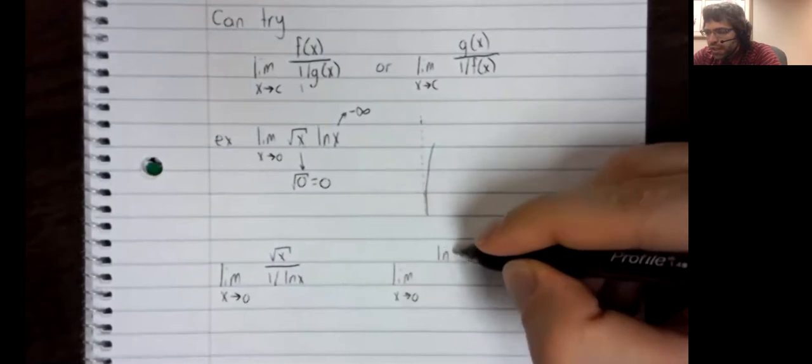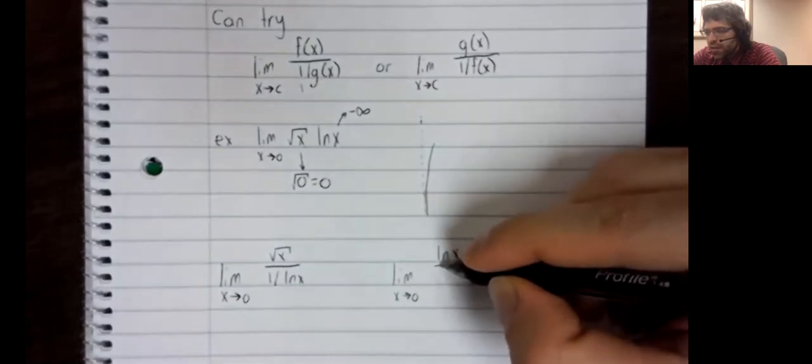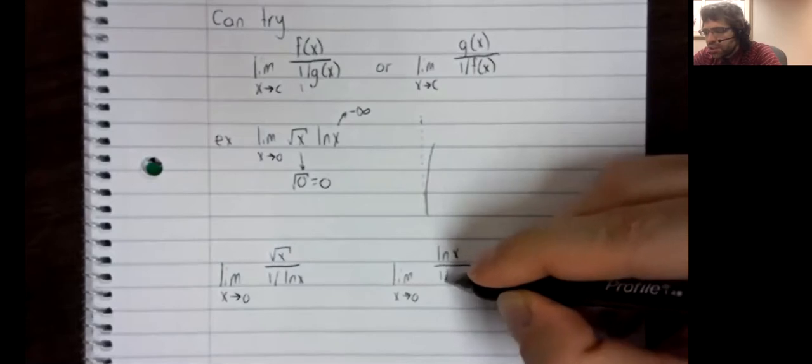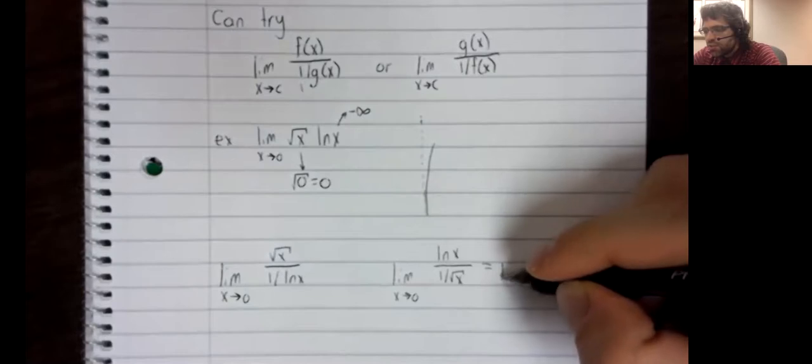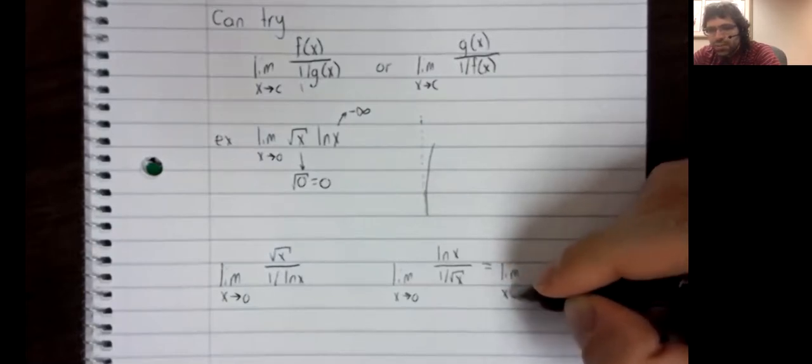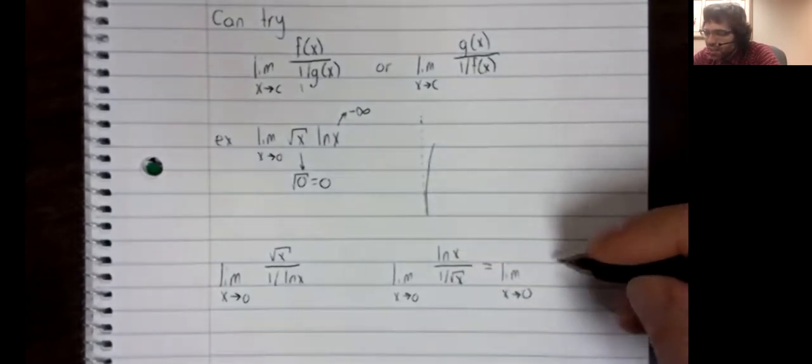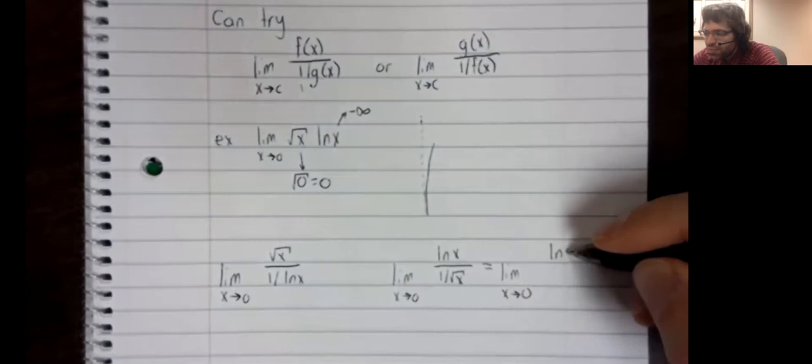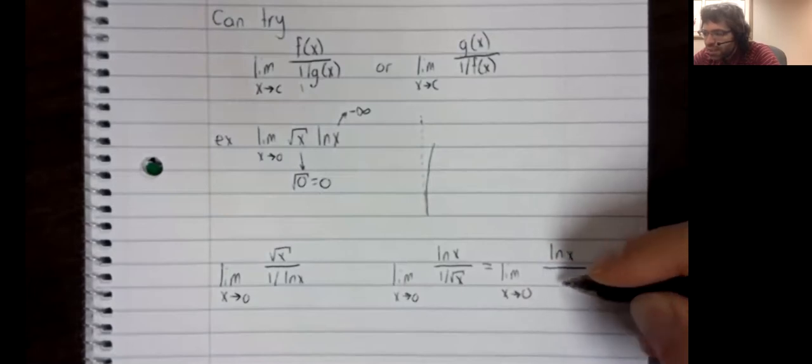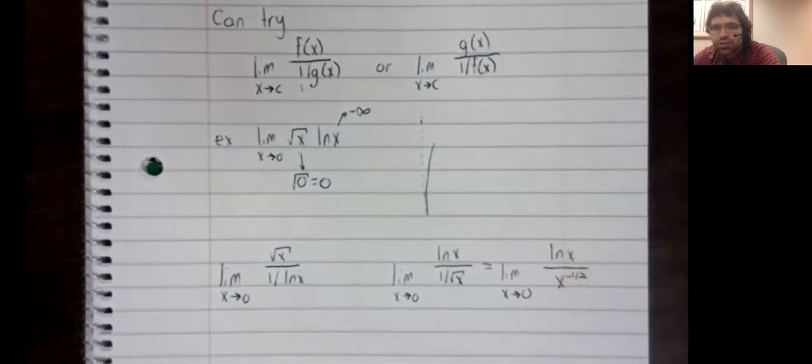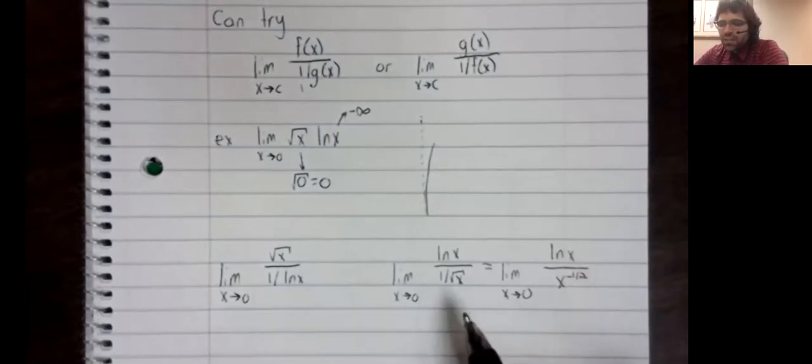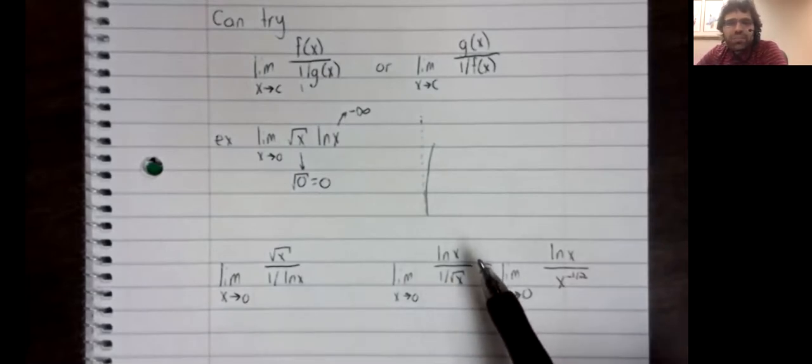And rather than dive in blindly, let's think this through. I mean, I'm rewriting this limit, so you can probably see that I've already made up my mind about which of these I want to try. But why did I select this limit?